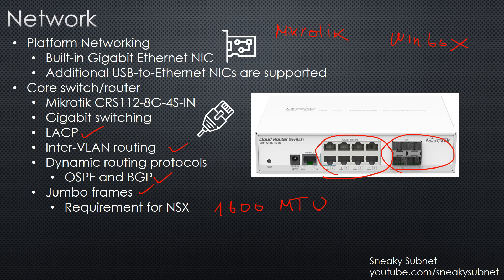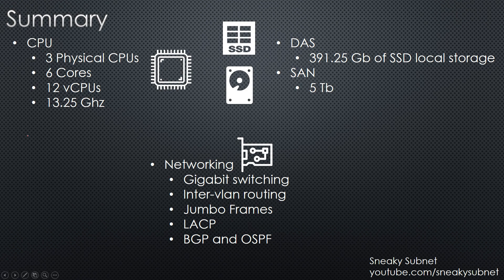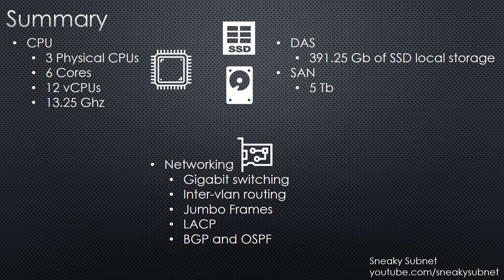Let me summarize my setup. In terms of CPU, I have 3 physical CPUs, 6 cores, 12 vCPUs and a total capacity of 13.25 GHz. I have 391 GB of SSD local storage and 5 TB of HDD storage on the NAS. My network provides gigabit switching with Jumbo Frames, inter-VLAN routing, LACP for aggregation, and BGP and OSPF for routing. That's all for the hardware part.